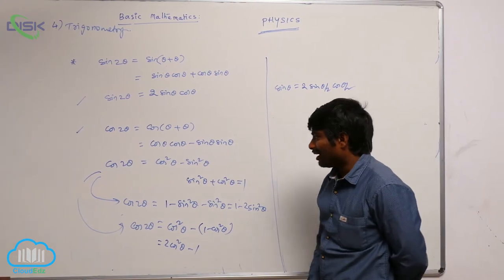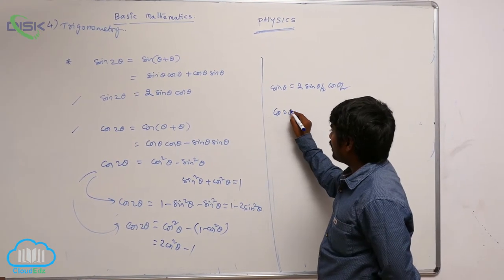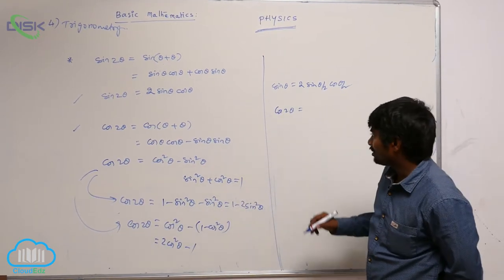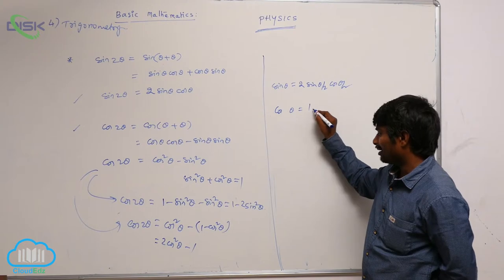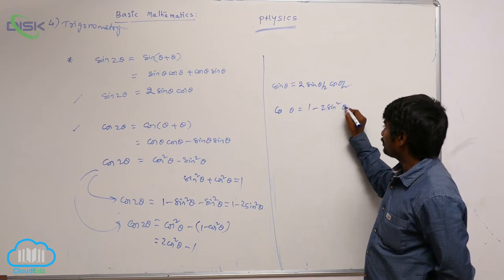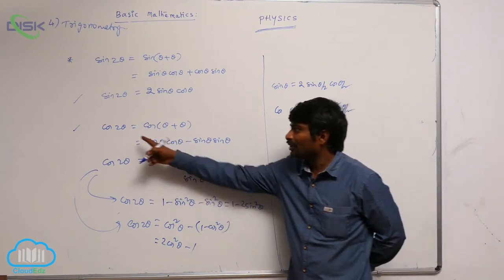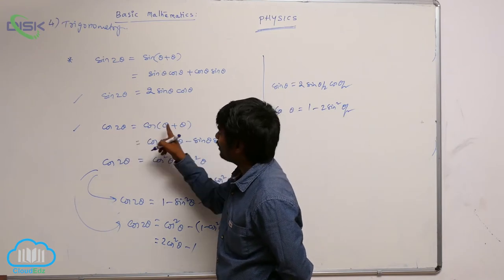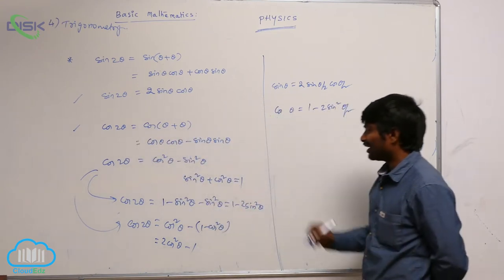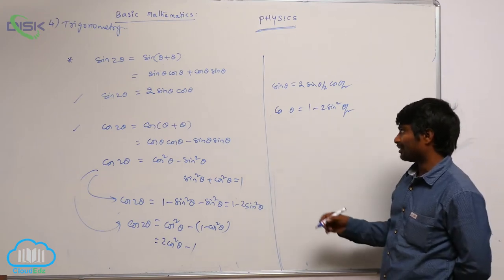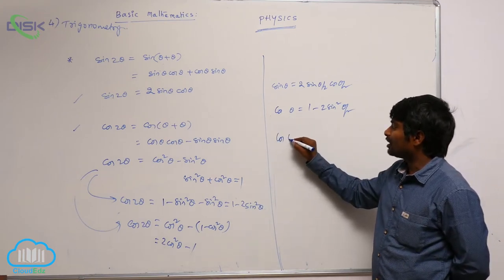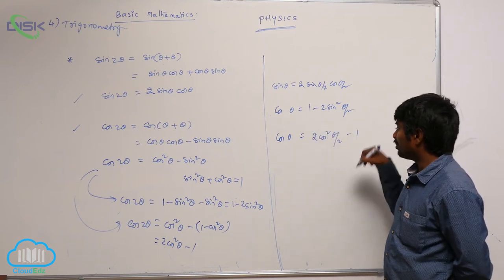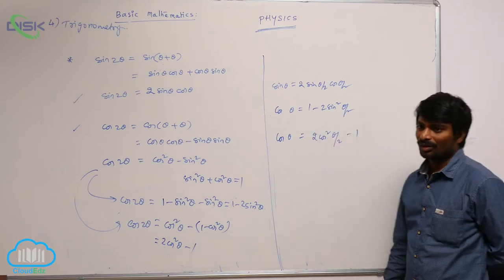Same way, cos 2θ = 2cos²θ − 1. For 2θ you got θ on the right-hand side, so for θ you will get θ/2, because 2θ is written as θ + θ, and if θ is given, use θ/2 + θ/2. So cos θ = 2cos²(θ/2) − 1.